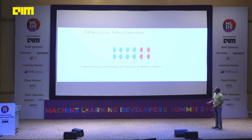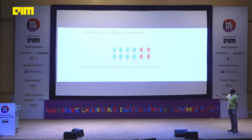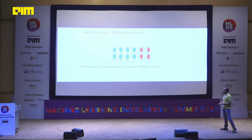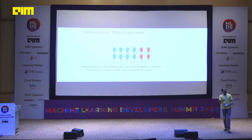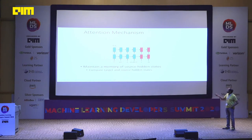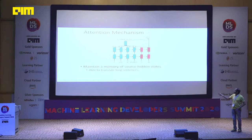Attentional models don't just take the last encoder state — they remember the entire history of encoder states. At generation time, the decoder takes its current vector and compares it with all encoder state vectors to figure out which encoder states it's most similar to, determining which words to pay attention to. For example, translating 'Ram is going to school' to 'Ram Patshala Ja Raha Hai' — when generating 'Patshala,' it's enough to look at 'school' in the input.